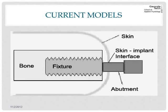Here's a basic design of an osseointegrated prosthesis. You have the bone and the fixture — the abutment or osseointegrated implant — which screws into the bone and goes through all the soft tissue, exiting through the skin interface. At the end of the abutment is where the rest of the prosthesis attaches.